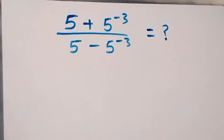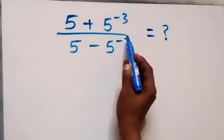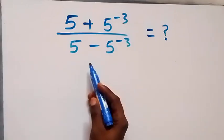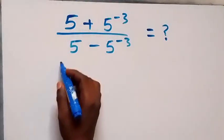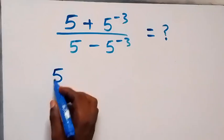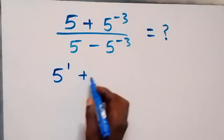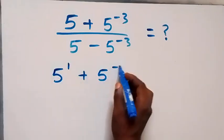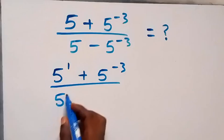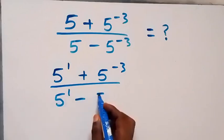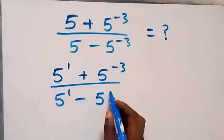Hello, you are welcome. How to solve this nice exponent problem: we have 5 plus 5 raised to power minus 3, divided by 5 minus 5 raised to power minus 3. Here we can equally rewrite this as 5 raised to power 1 plus 5 raised to power minus 3, divided by 5 raised to power 1 minus 5 raised to power minus 3.